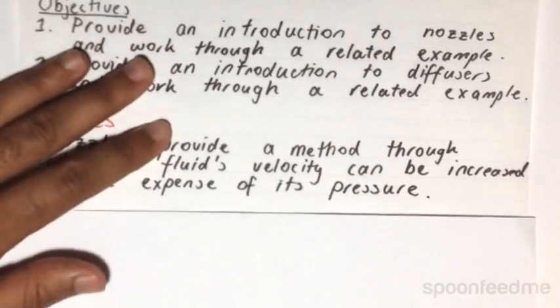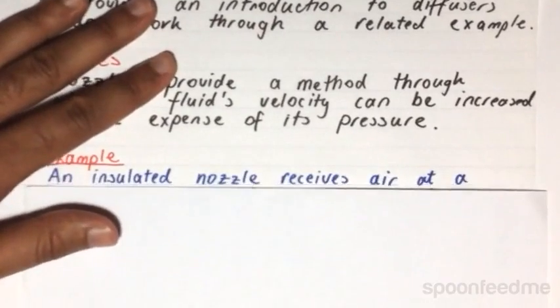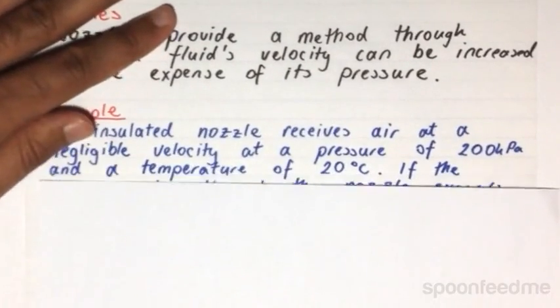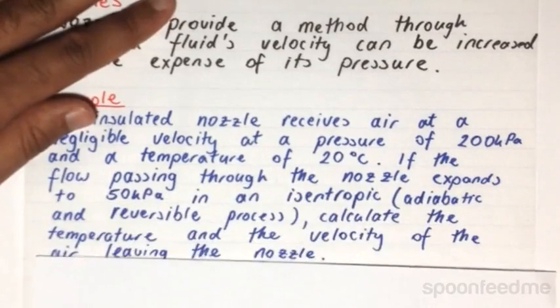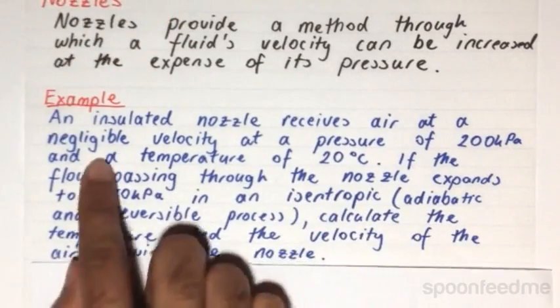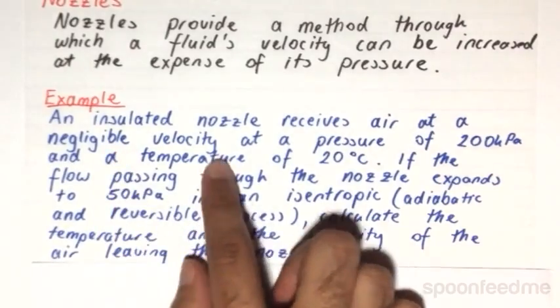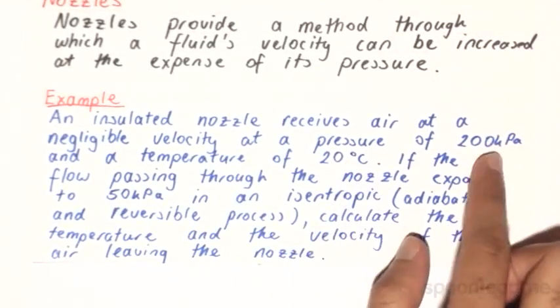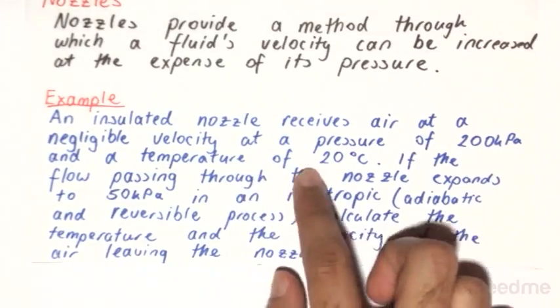And to move on to a quick example, we have the following. An insulated nozzle receives air at a negligible velocity at a pressure of 200 kilopascals and a temperature of 20 degrees Celsius.